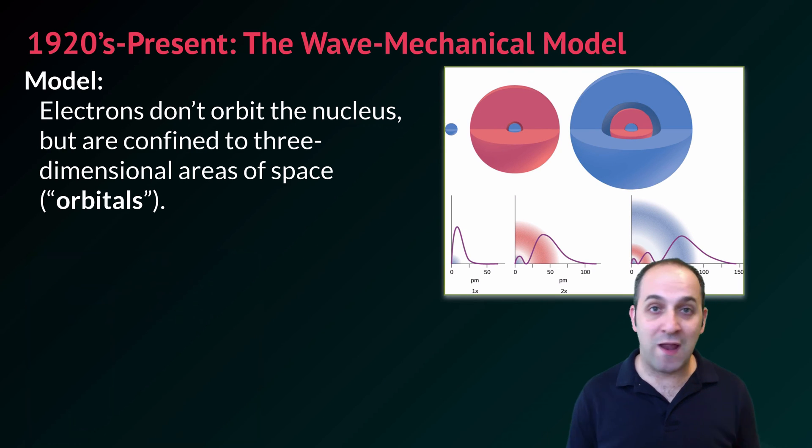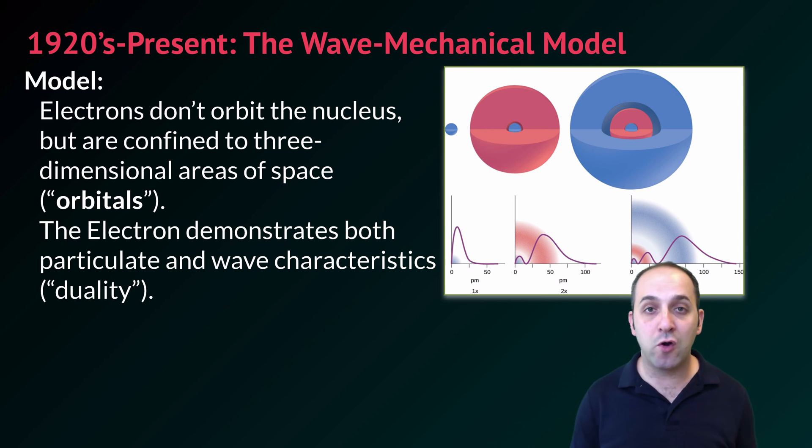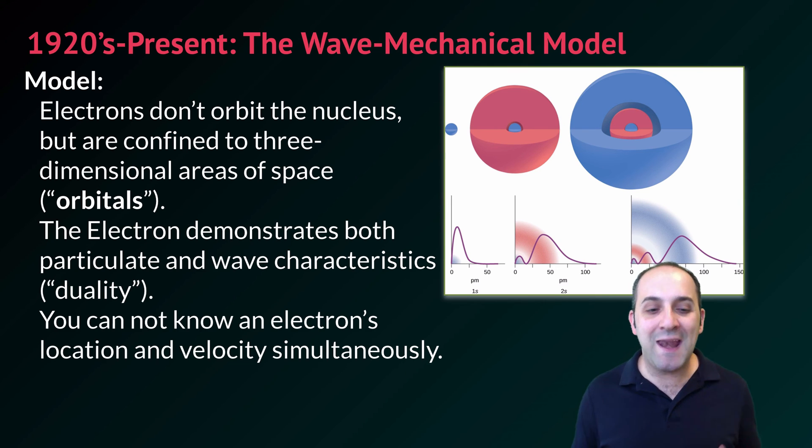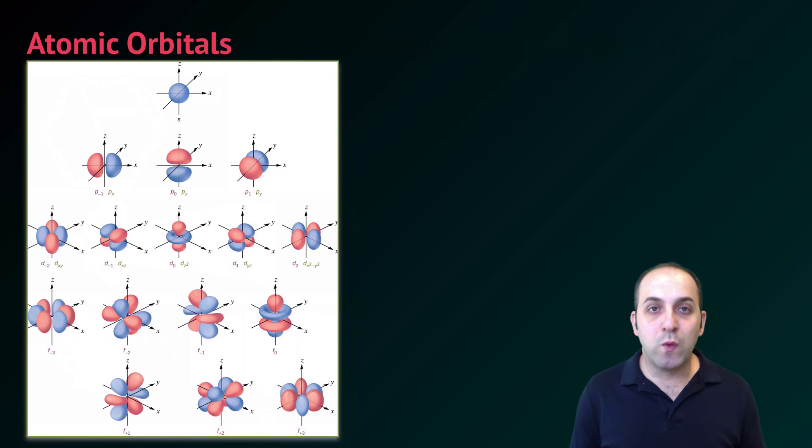Bohr's model is then refined further over the rest of the 20th century into what we now call the wave mechanical model. This model looks at the location of the electrons and says that the electrons aren't really orbiting the nucleus, but instead they're confined to three dimensional areas of space, which are called orbitals. The model is showing you what these orbitals look like. They're just regions where we are most likely to find a particular electron at any one period of time. The electron itself can actually be described both as a wave and as a particle, which is a quantum characteristic known as its duality. Furthermore, you can't actually ever know an electron's location or position and its velocity or where it's going simultaneously. The more you learn about one, the less information you get about the other. Which is why these regions of space have to be defined as regions of probability.